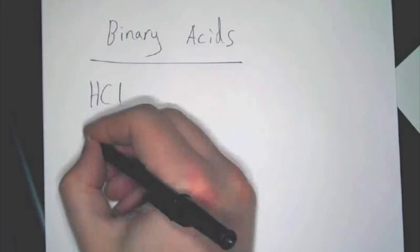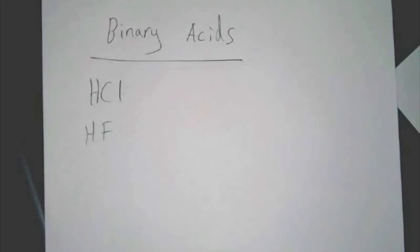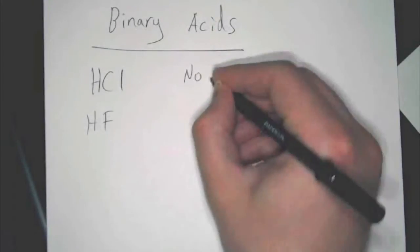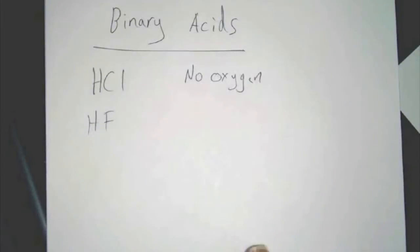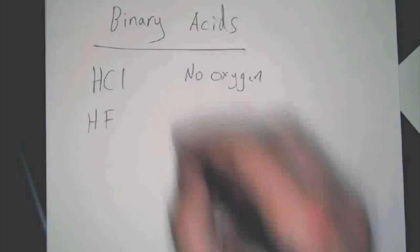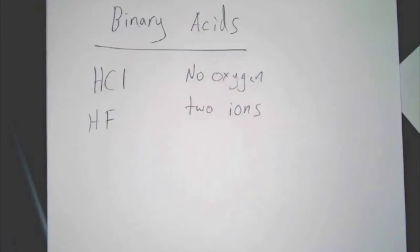Let's look at two binary acids. Now, binary acids, based on all the notes you took, there's a couple key things. First, there's no oxygen present. It would not be a binary acid if it had oxygen, at least for our purposes. At the same time, there are two ions only. That's why it's called binary. Binary meaning two, like binary code.